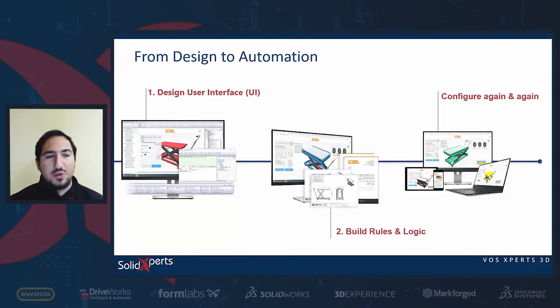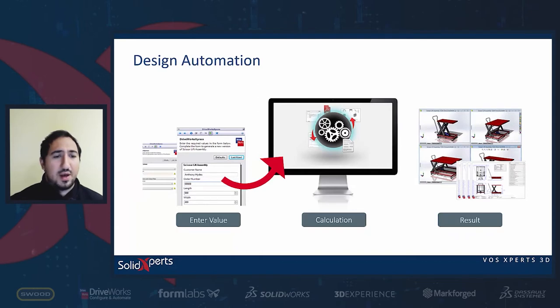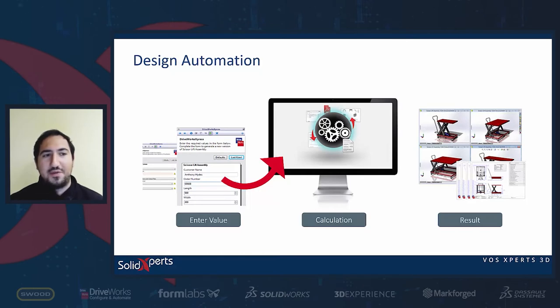Once you have those two steps together, you can directly configure the model again and again that easily. You just enter a value, DriveWorks makes all the calculations, and outputs the results. Design automation using DriveWorks can eliminate a lot of errors, save you time, and give you more time to innovate on other aspects of your product. It enables you to design and manufacture efficiently and to work smarter than your competitors.